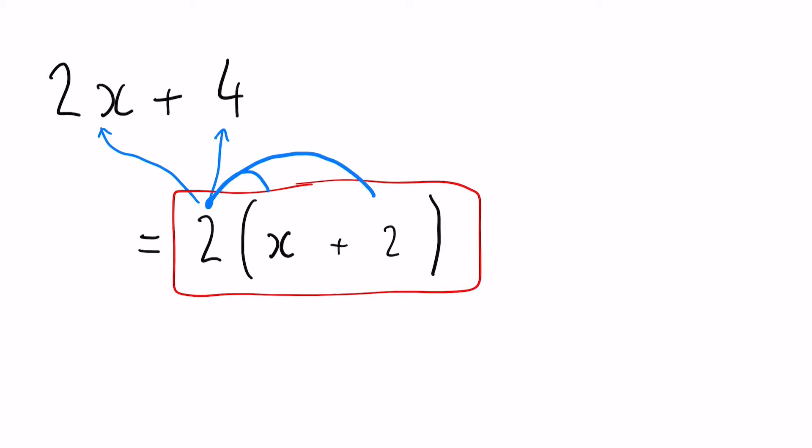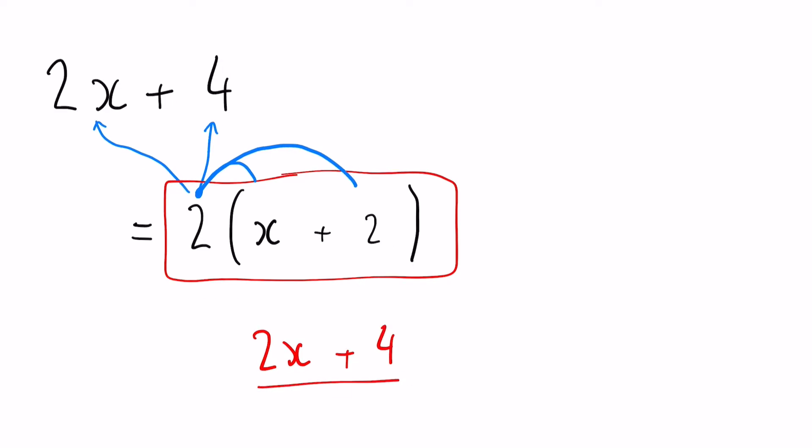We want to multiply these. 2 multiplied by x gives us 2x. And we've got 2 multiplied by a positive 2, which is going to give us positive 4. And you can see that that, in fact, does make the original question. So our answer must be right.